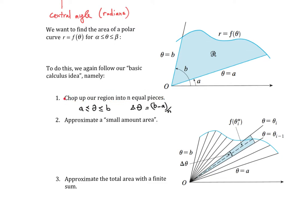After we've chopped up our region into n equal pieces, we want to approximate a small amount of area. This is the approximation step. That small amount of area is what I'm going to call delta A, a small change in area. How do I figure that out? That's where I use my area of a sector formula. It's one half, we want to put the radius squared in here, and then we have that central angle, which would be delta theta. What should we put in for our radius?